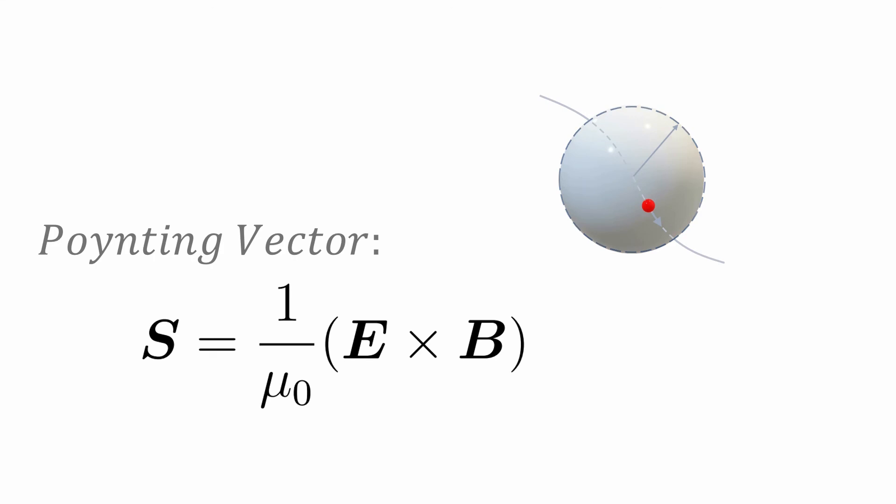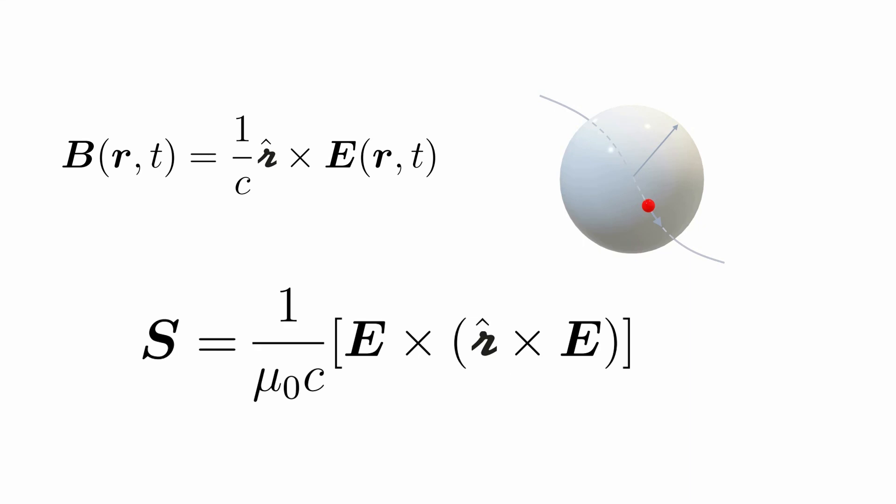But first, let us substitute the known values and simplify it as best we can. Since the magnetic field can be produced from a changing electric field, we can substitute the value of B as follows. And using the rule for vector triple products, we can simplify it to the following terms.